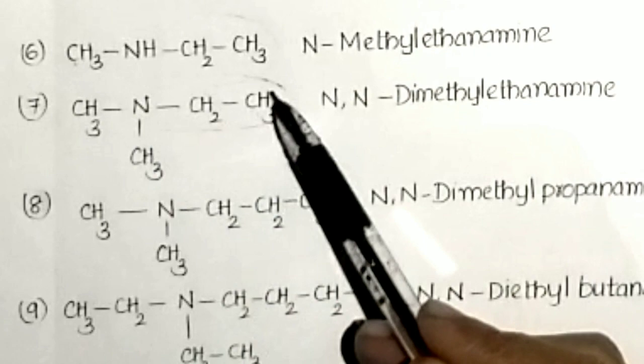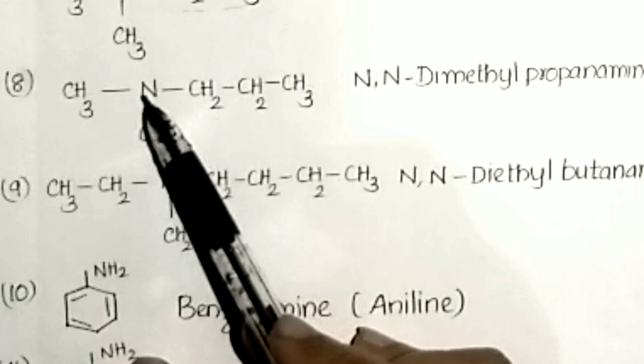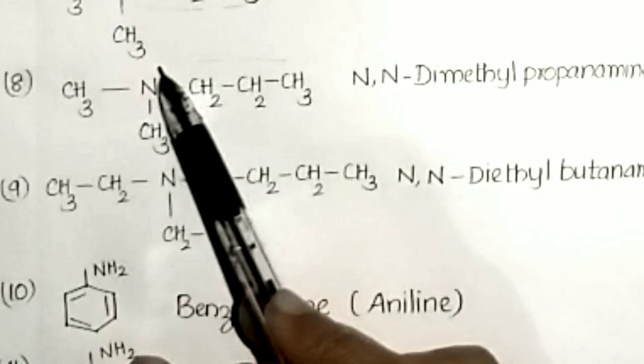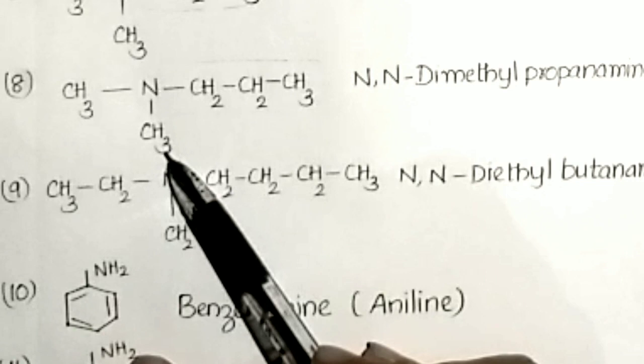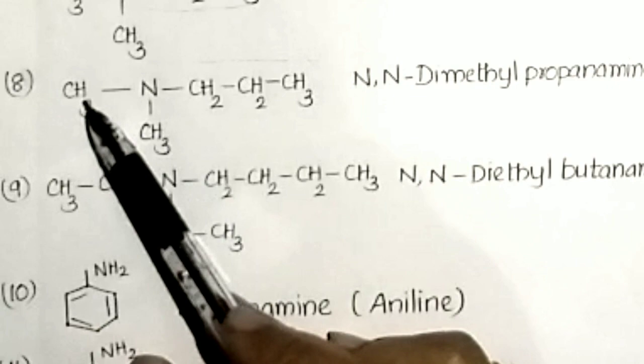For CH3-N(CH3)-CH2CH2CH3: nitrogen has one carbon on one side, one carbon on another side, and three carbons on the third side. The longest chain with three carbons is taken as parent — propanamine. The other two methyl groups become substituents, giving N,N-dimethyl propanamine.